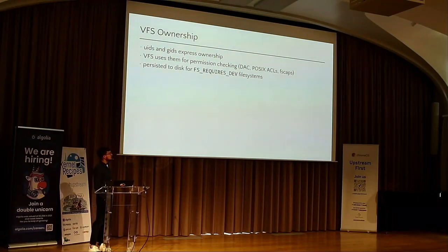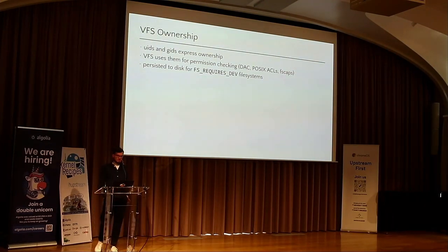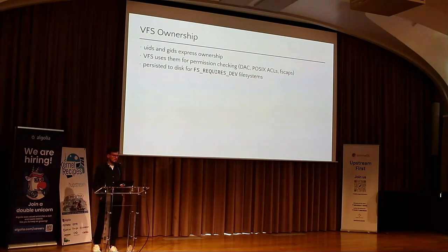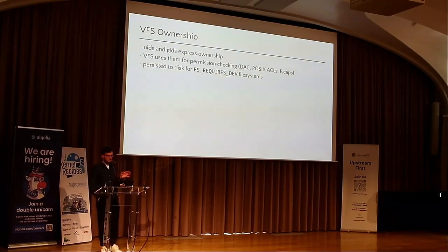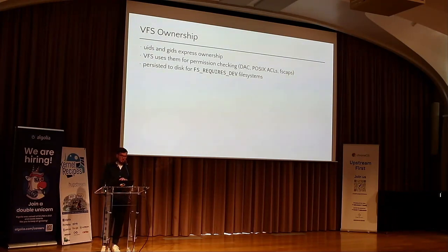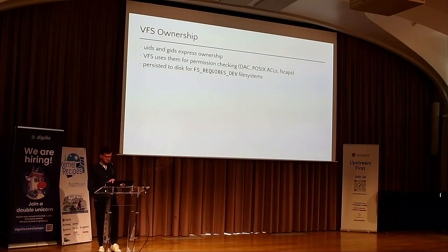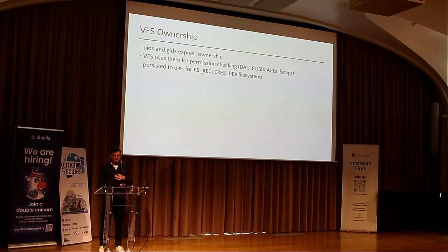First, we need to briefly talk about ownership information. The VFS expresses ownership information through UIDs and GIDs, and this is similar to how we express ownership in other places in the kernel. The VFS has various ownership concepts, among them generic DAC permissions, POSIX ACLs which may store additional UIDs and GIDs on disk, and file system capabilities which can also store additional ownership information — UIDs specifically. The kernel, and here specifically the VFS, uses this information to check permissions to determine, for example, whether a caller is allowed to interact with an inode or not.